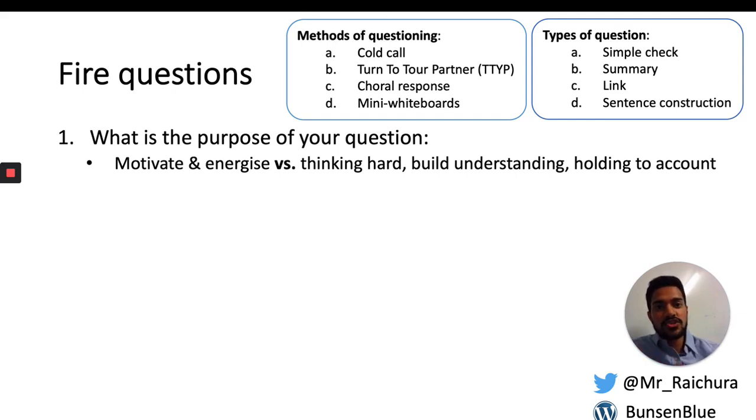Thirdly, there's links. You might say, how does this idea link to this idea? And that can be as simple as saying things like, lithium is an element. What does that mean in terms of the type of atom that's found? Link those two ideas together. And they might say, lithium is an element which means lithium is made up of only one type of atom. So they're linking their knowledge of element to the example of lithium.